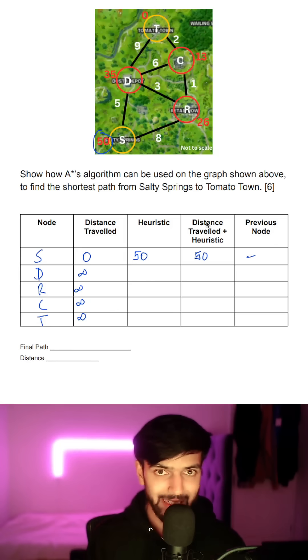Show how an A-star algorithm can be used to go from Salty Springs to Tomato Town. All we're going to do differently compared to Dijkstra's is that we're going to be comparing this value over here rather than the distance traveled on its own.